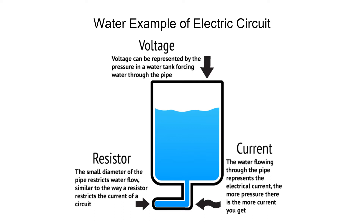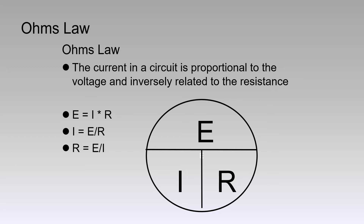Purpose-built resistors increase the resistance, as do items such as light bulbs, electric motors, etc. Ohm's Law states that the current in a circuit is proportional to the voltage and inversely related to the resistance. Written as an algebraic expression: voltage equals current times resistance, current equals voltage divided by resistance, or resistance equals voltage divided by current.